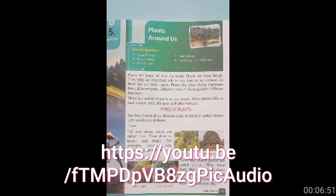Next, aquatic plants. Aquatic plants वो plants होते हैं जो water में grow करते हैं — पानी में. उनको aquatic plants बोलते हैं. These can be found in lake, pond, seas, ocean. ये plants होते हैं जो lakes में, pond में, नदियों में, समंदर में, ocean में पाए जाते हैं. For examples, lotus and hydrilla are aquatic plants.